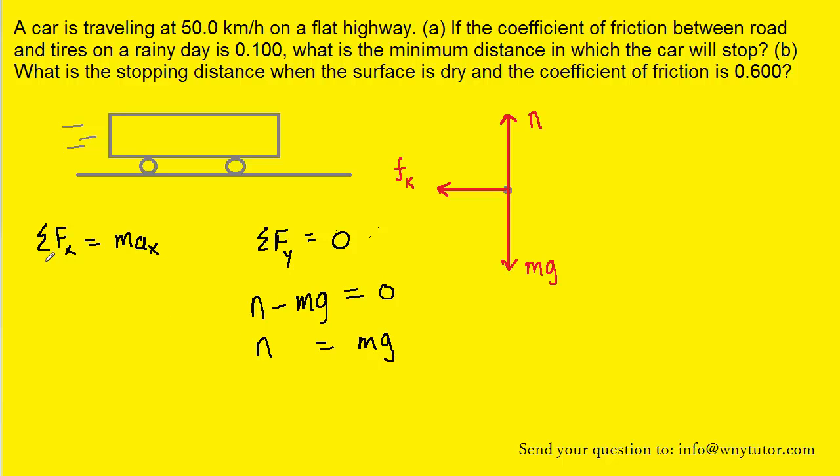Let's next turn our attention to the sum of the forces in the x-direction. There is only one force acting in the x-direction, and that is the kinetic frictional force. Notice we've included a negative sign for the kinetic frictional force because it is pointing to the left in the free body diagram. We know that the expression for the kinetic frictional force is coefficient of kinetic friction times the normal force. We determined a moment ago that the normal force is equal to mg, so we can substitute mg in for n.